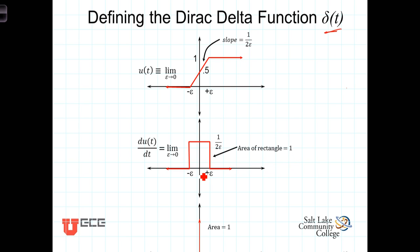In other words, the width is two epsilon, and the height is one over two epsilon. So the area of this rectangle, even as epsilon gets smaller and smaller, the height getting bigger and bigger, makes it so that the area is a constant value of one.